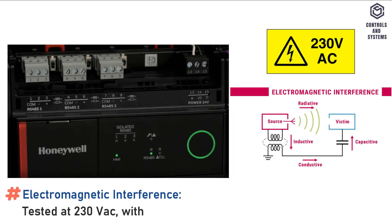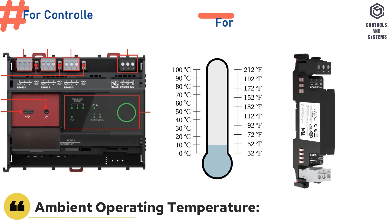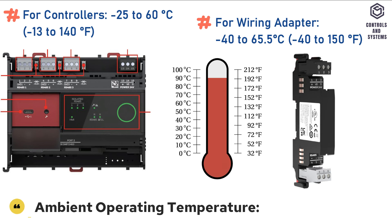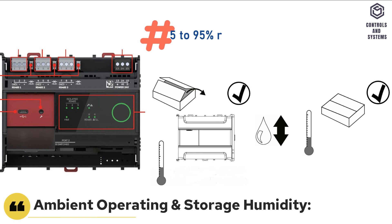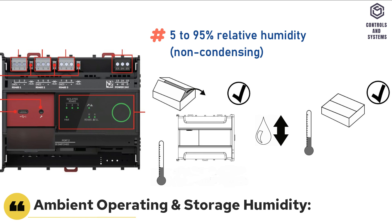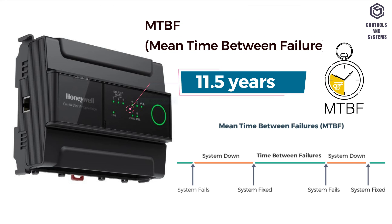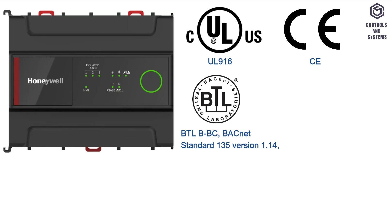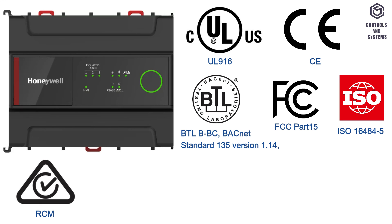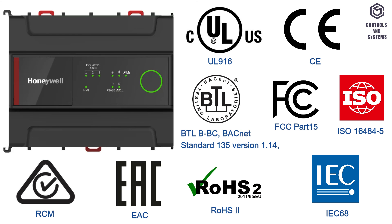Electromagnetic Interference tested at 230 Volt AC with modules in normal condition. Operating Environment: Ambient Operating Temperature for controllers is −25 to 60°C; Storage Temperature is −28.9 to +70°C. Ambient Operating and Storage Humidity is 5 to 95% relative humidity non-condensing. Vibration under operation is 0.024 double amplitude. Mean time between failure is 11.5 years. Certifications: Underwriter Laboratories 916, Conformité Européenne, BA Connect Testing Laboratories, Federal Communications Commission, Regulatory Compliance Mark, Eurasian Conformity, Restriction of Hazardous Substances 2. Testing Electrical Components: IEC 68.